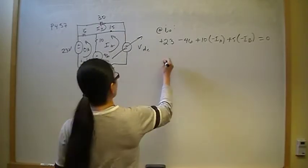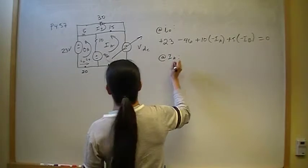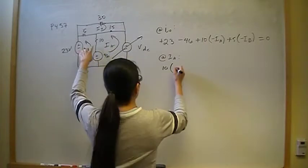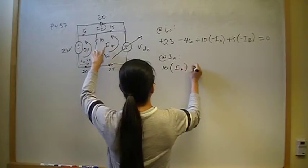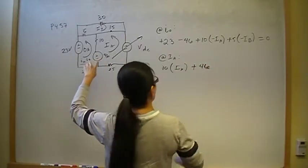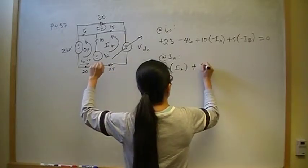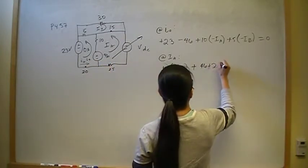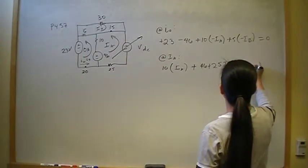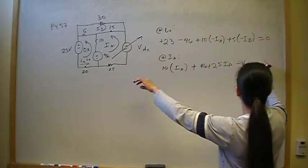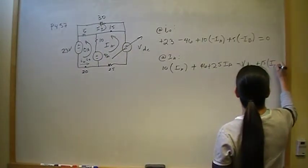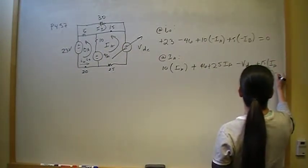The next mesh equation is at I_A. Starting here: 10·I_A plus 46 (the voltage drop), plus 25·I_A, minus V_dc, plus 15·(I_A minus I_B) equals zero.